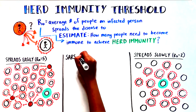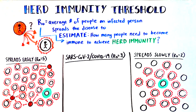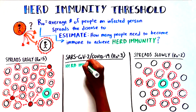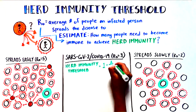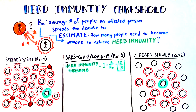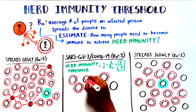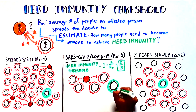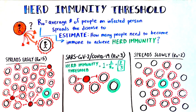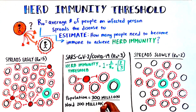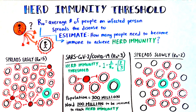For the COVID-19 pandemic, R0 is approximately 3. Our mathematical model to calculate the herd immunity threshold tells us that theoretically two-thirds of the population would have to become immune in order to slow down and eventually stop the spread of SARS-CoV-2, the virus that causes COVID-19. In a population of 300 million, for example, 200 million people would need to be immune to reach the herd immunity threshold.